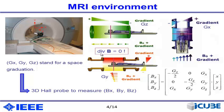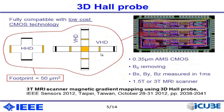To measure these small magnetic fields, we use a 3D Hall probe. I presented this chip last year — it features three amplifying channels and was designed in standard 0.35 micrometer CMOS technology. This chip removes the B0 field, since we only measure the small components added by the gradients. The gradients are applied for one millisecond, so every millisecond after gradient application we obtain a 3D field measurement. The chip is also compatible with 1.5 and 3 Tesla MRI scanners.